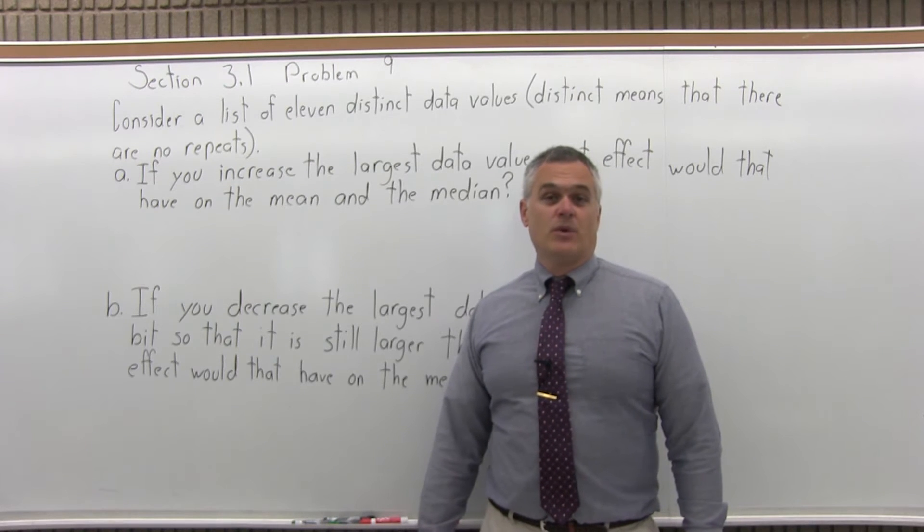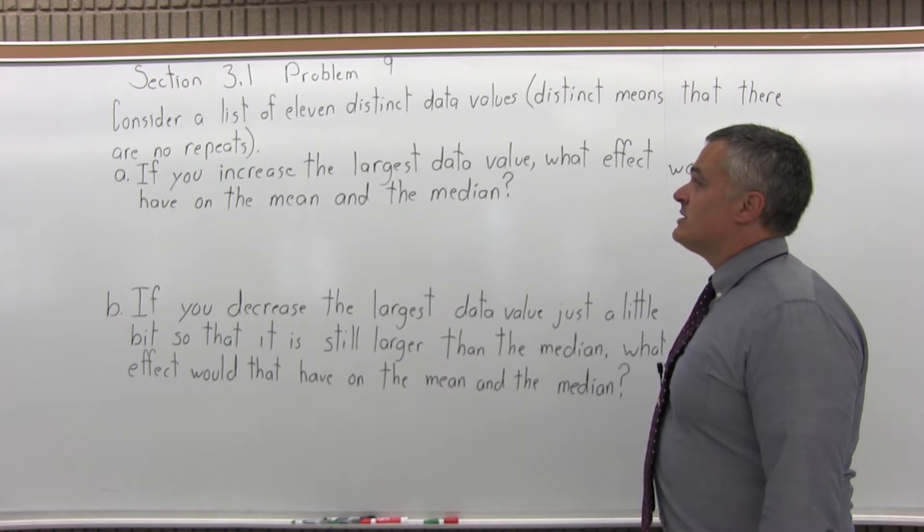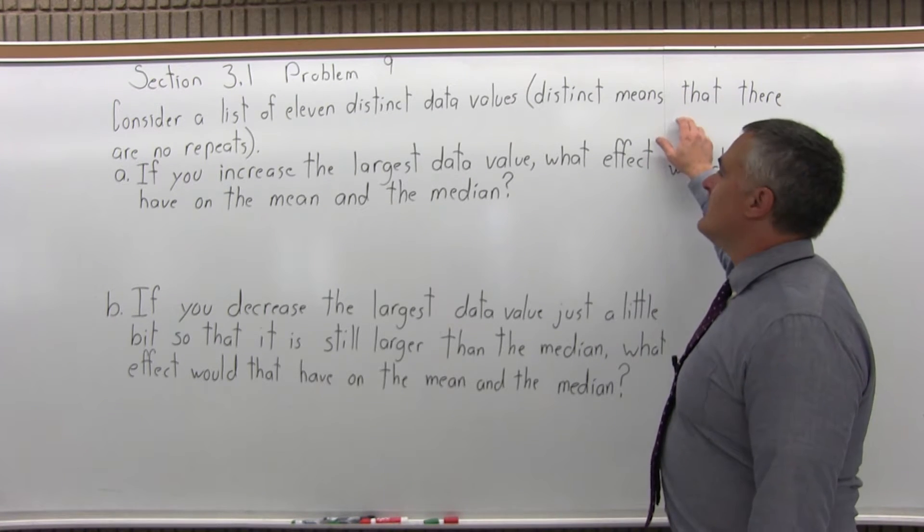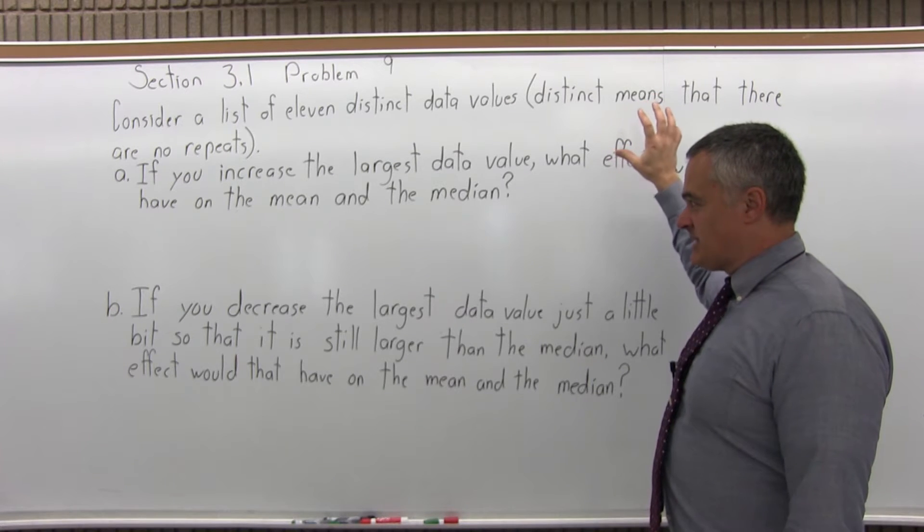This is Section 3.1, Problem 9. It says, consider a list of 11 distinct data values. By distinct we mean that there are no repeats, they're all different, every number is different.